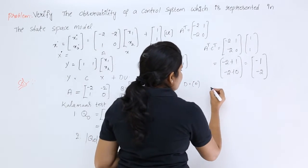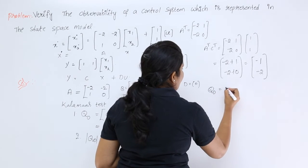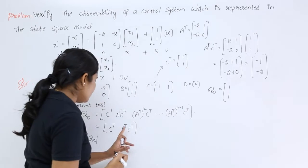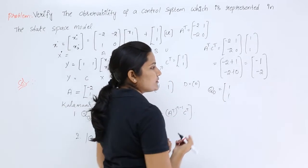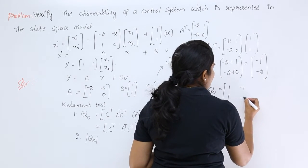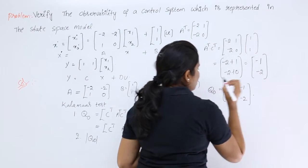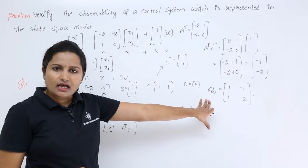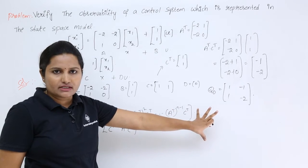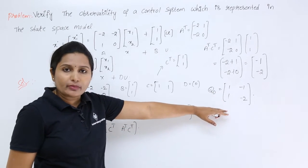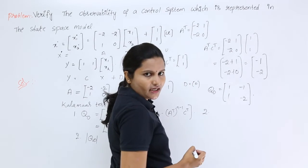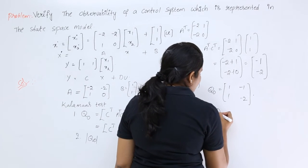We can now form the observability matrix. C^T = (1; 1) and A^T·C^T = (minus 1; minus 2). So the observability matrix Q_O = [[1, minus 1], [1, minus 2]]. This completes the first step of Kalman's test — forming the observability matrix. The second step is to take the determinant of this matrix.